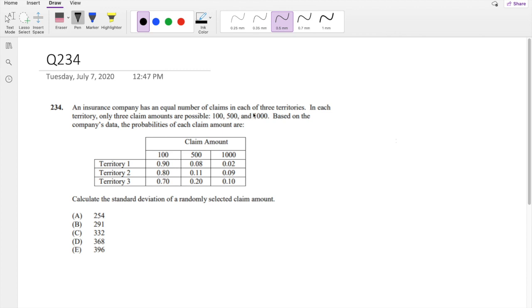An insurance company has an equal number of claims on each of three territories. In each territory, only three claims amounts are possible: 100, 500, and 10,000. Based on the company's data, the probability of each claim amount is listed here.